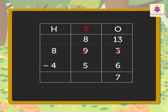Now, subtract the tens. That is, eight minus five is equal to three. Lastly, subtract the hundreds. That is, eight minus four is equal to four.